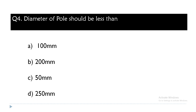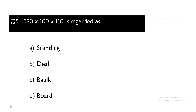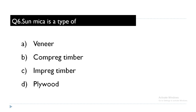Question 4: The diameter of a pole should be less than — 100 mm, 200 mm, 50 mm, or 250 mm? Answer: less than 200 mm. Question 5: A 180×100 by 100×110 section is regarded as — scantling, deal, bulk, or board? Answer: scantling. Question 6: Sun mica is a type of — veneer, cumbrek timber, impreg timber, or plywood? Answer: sun mica is an example of impreg timber.